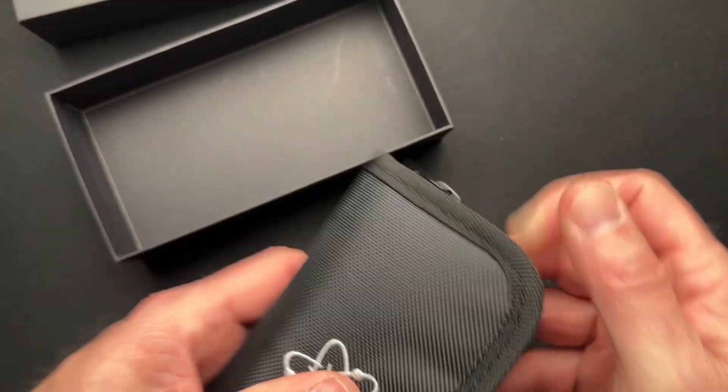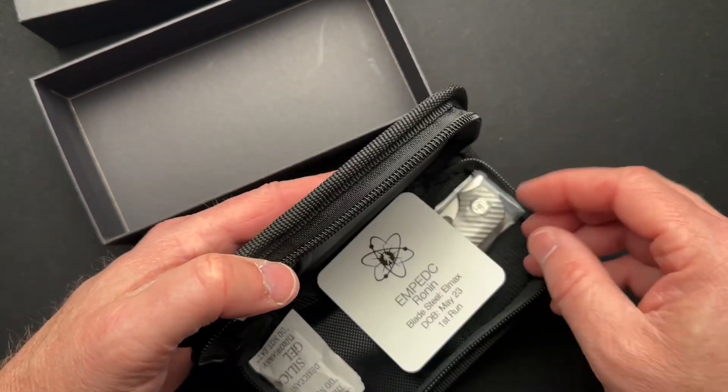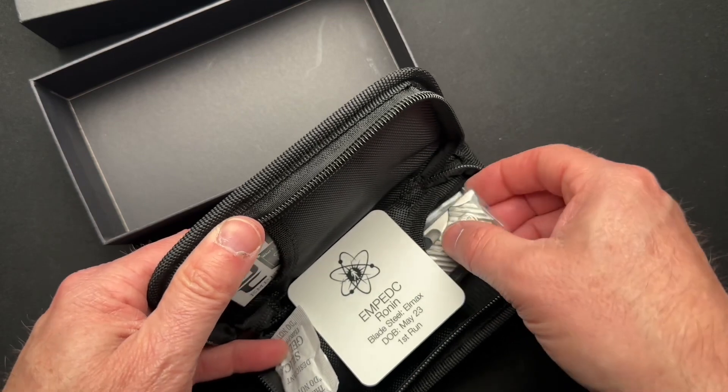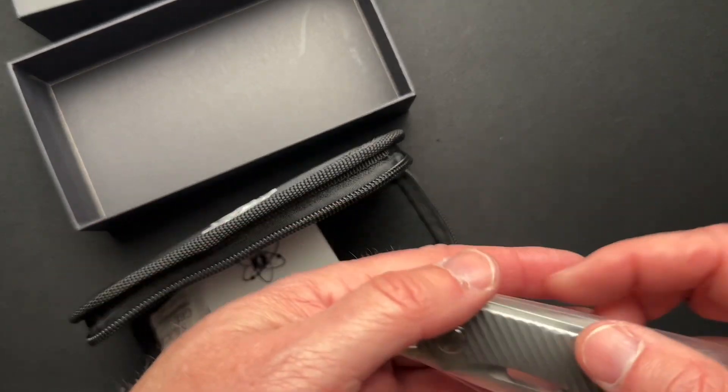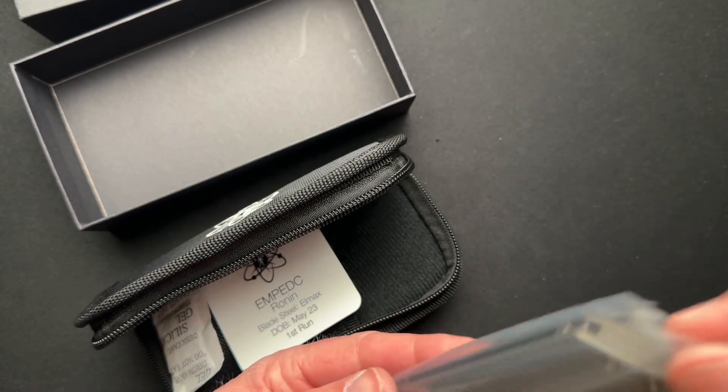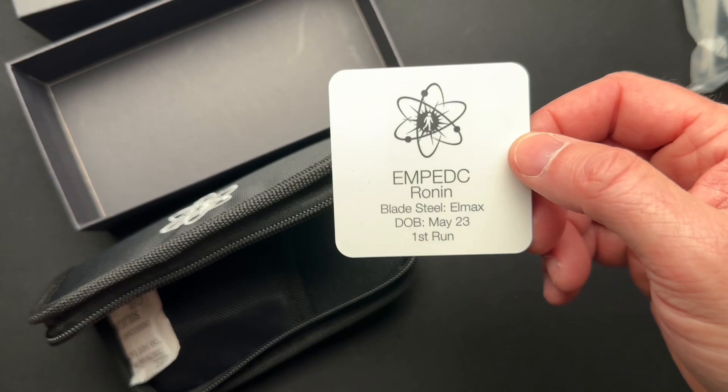Zipper pouch, normal affair. Oh, this is the Ronin. No, it's not what I thought it was. See, it's why I was careful not to say what I thought it was. So this is the EMPEDC Ronin in LMAX.